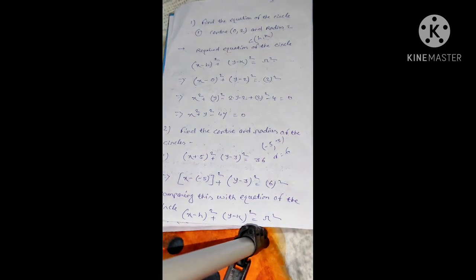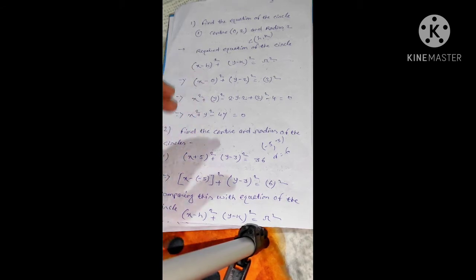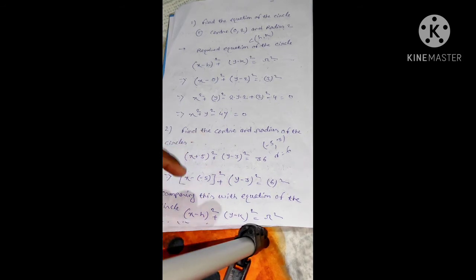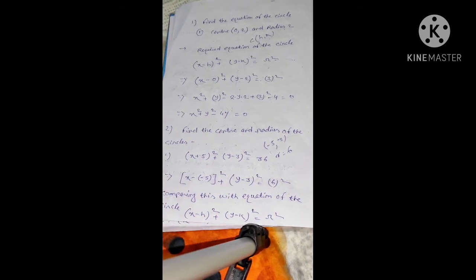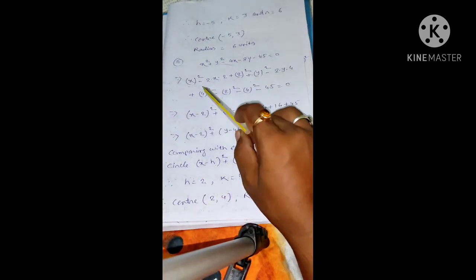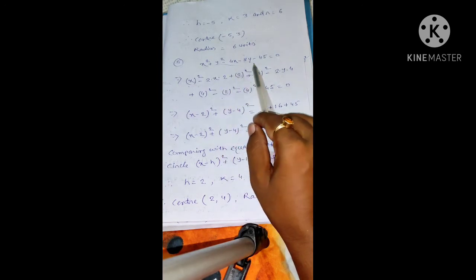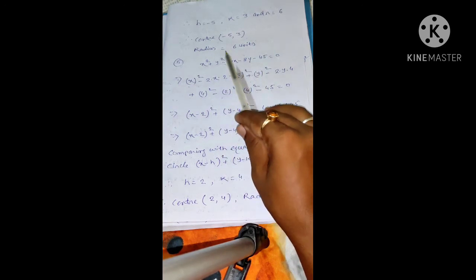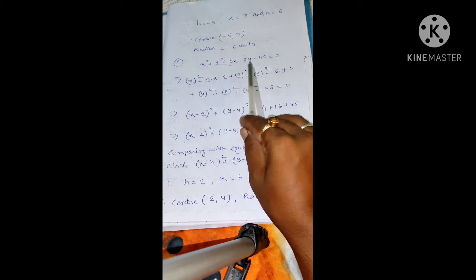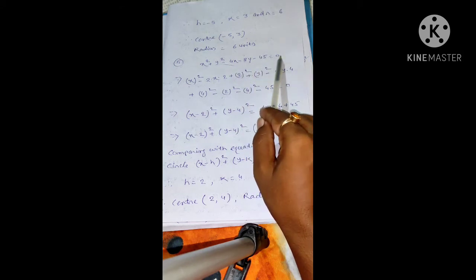This is the way we can find center and radius if the equation is given. Both directions are possible: sometimes center and radius will be given and we have to find the equation, as we have seen; and vice versa, the equation will be given and we have to find the center and radius. Now let's see another problem. Sometimes the equation may be given in simplified form: x squared plus y squared minus 4x minus 8y minus 45 equals 0.